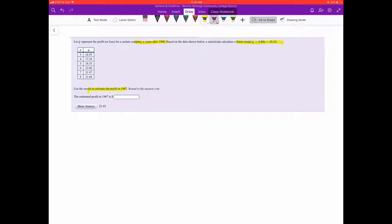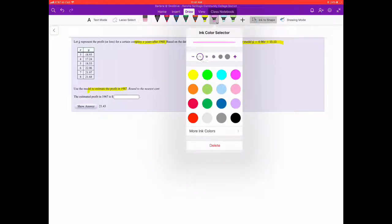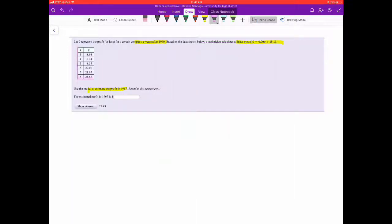Here a company has years after 1960 of being in production and Y is the list of profits. So three years after 1960 the profit was 18.93. Eight years after the company has been in production the profit was 21.68.